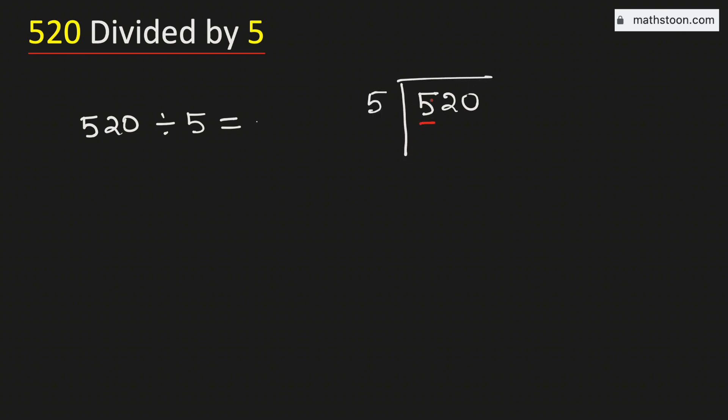Let's consider the number 5. We know that 5 times 1 is 5. Subtract, we get 0.